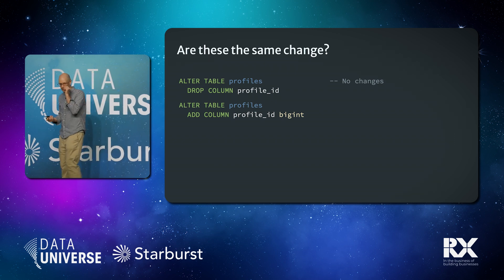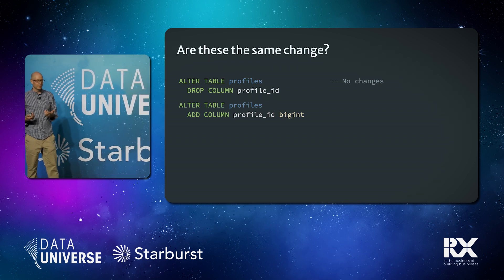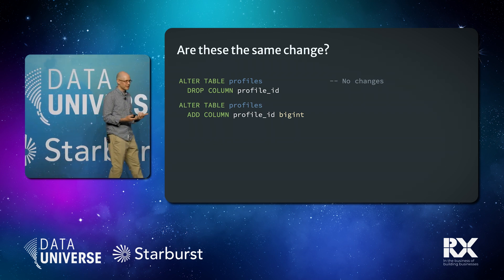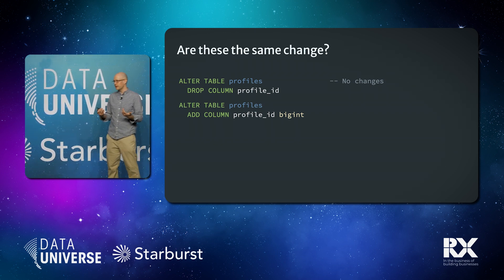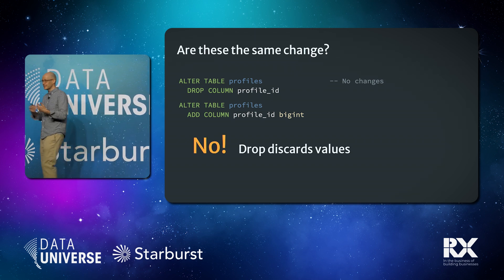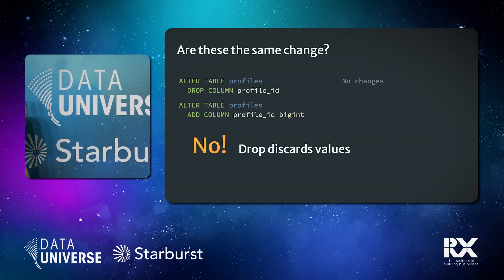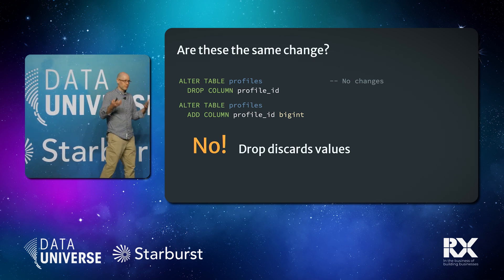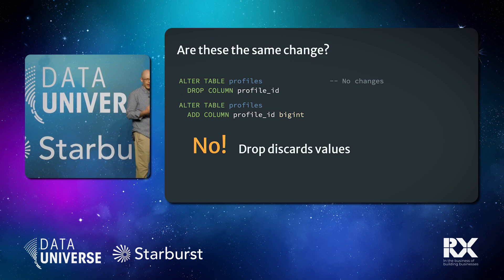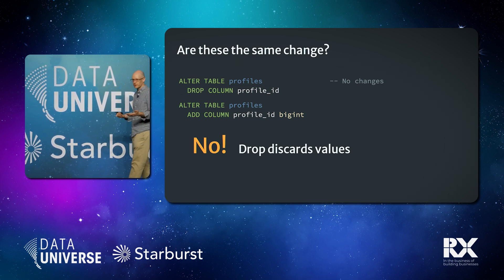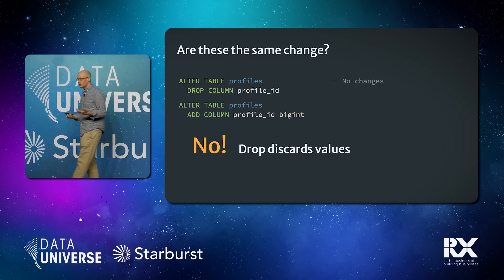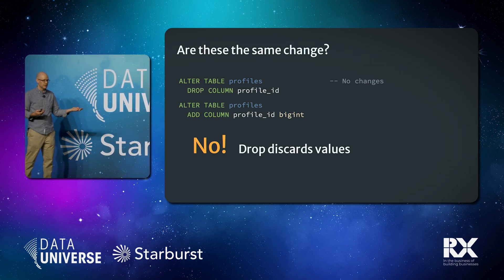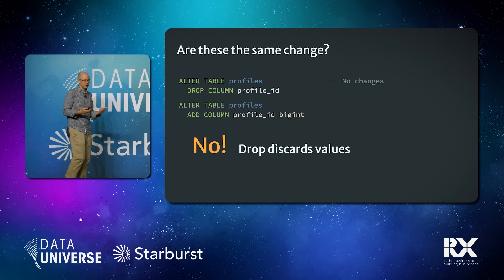Another example is what we call the zombie data problem. In a traditional relational database, when you drop something it should discard those values — even if you add something with the same name back. But in the Hive world, this often results in bringing back data because it has the same name in the Parquet file or the same position in a CSV file. You get weird situations where months later, somebody makes a change to the data set and resurrects data that shouldn't be there.